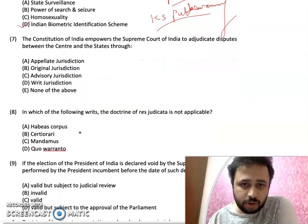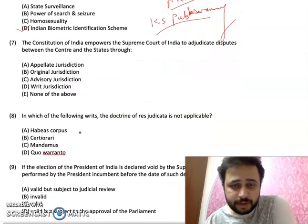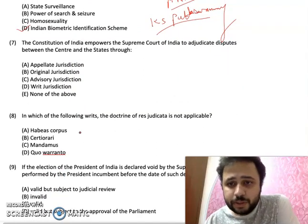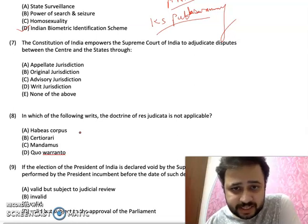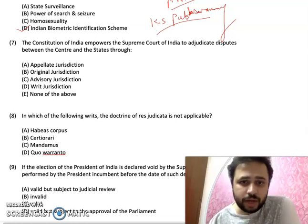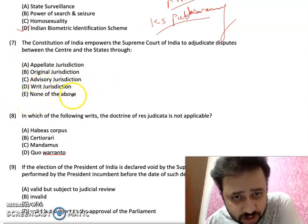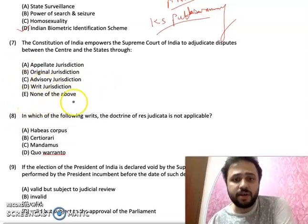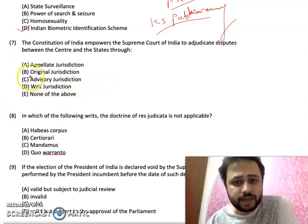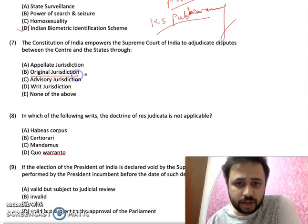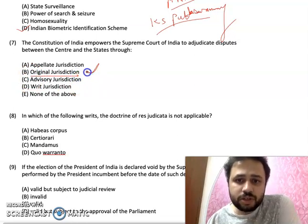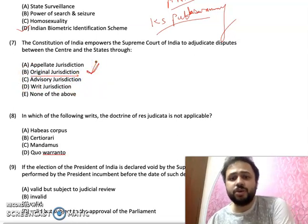MCQ number 7: The Constitution of India empowers the Supreme Court of India to adjudicate disputes between the Centre and States through — appellate jurisdiction, original jurisdiction, advisory jurisdiction, or none of the above? The answer is original jurisdiction — this is the original jurisdiction of the Supreme Court.